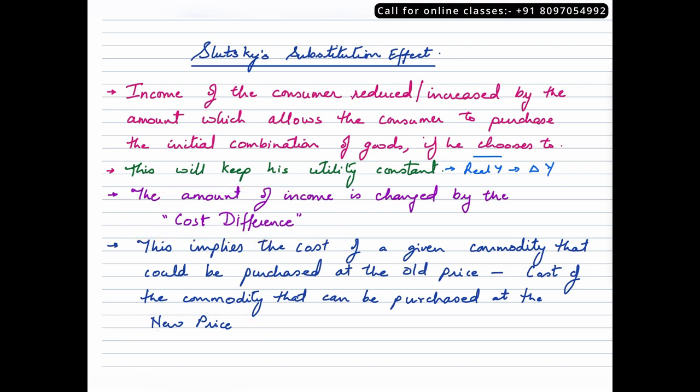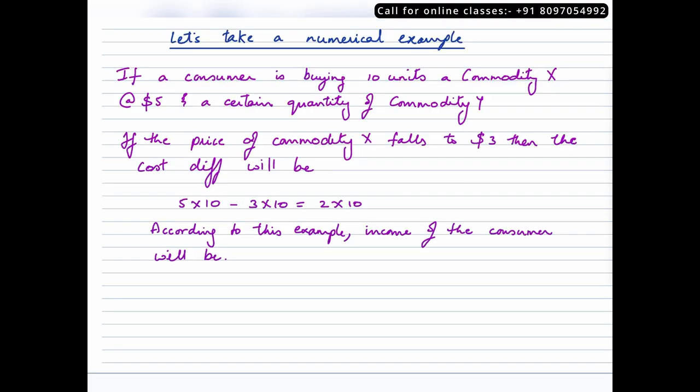To make it more understandable, let's take a numerical example. We are assuming that the consumer is buying 10 units of commodity X at five dollars and a certain quantity of commodity Y. Now if we assume that the price of commodity X is falling to three dollars, then the cost difference is 5×10 minus 3×10, which is 2×10, that comes out to twenty dollars. And this is the amount of money or income that will be reduced in this particular example.